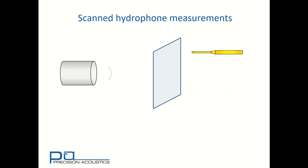We've already seen that the radiation force balance enables us to make a measurement of ultrasonic power in a few tens of seconds. Scanned hydrophone measurements are much slower. Typically, a 100 by 100 point scan can take three hours worth of measurement. So why would we incur this measurement overhead?